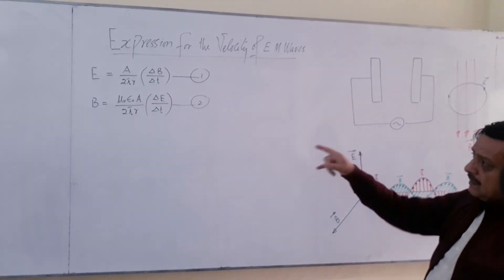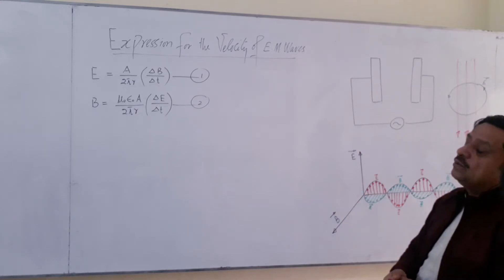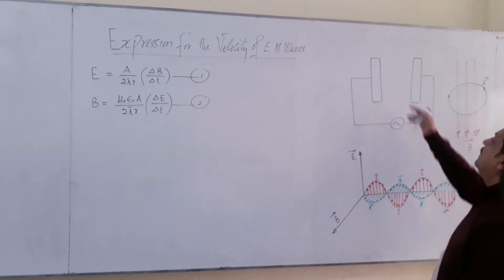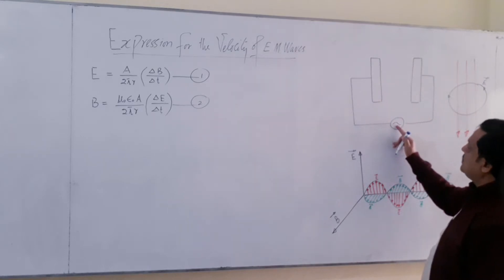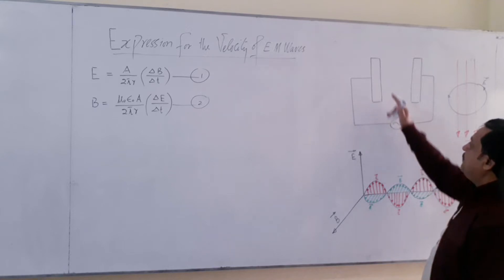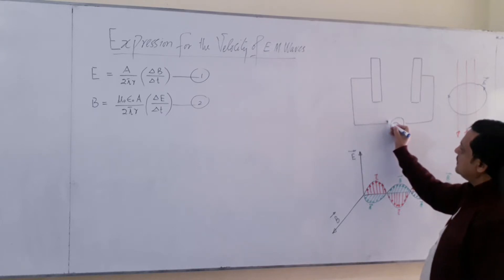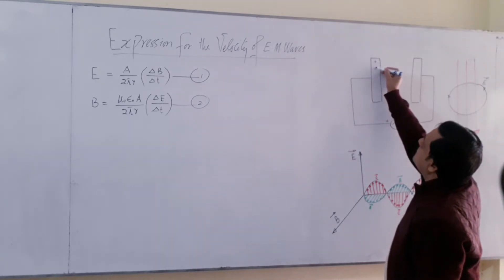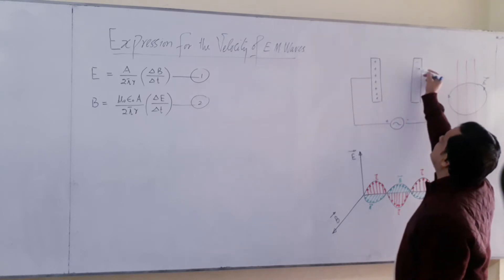In the first half cycle, if this plate is positively charged, then this plate is negatively charged. And we have learned that when you change E, there will be an induced magnetic field.